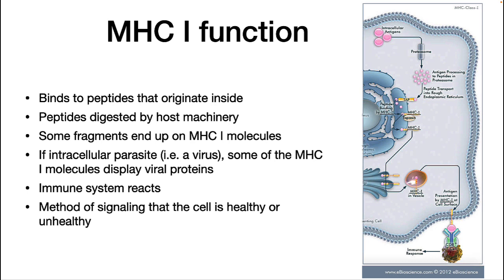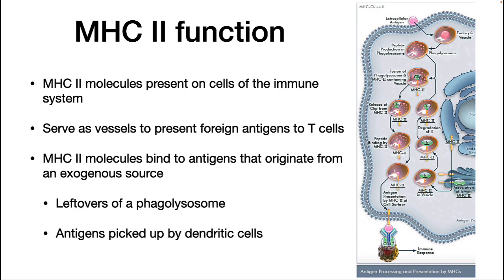The immune system, namely T cells, reacts to this. This process is a way of signaling the health of the cell. MHC2 molecules are present on cells of the immune system. These APCs serve as vessels to present foreign antigens to T cells. MHC2 molecules bind antigens that originate from an exogenous source, such as the leftovers of a phagolysosome or antigens picked up by dendritic cells. These are then processed and put into an MHC2 molecule and presented to a T cell.